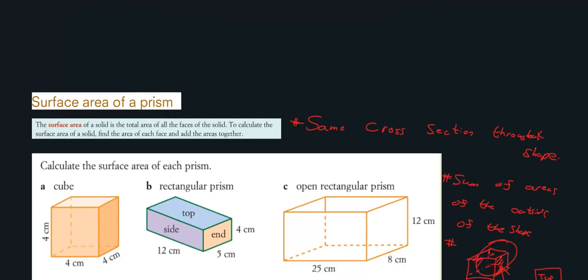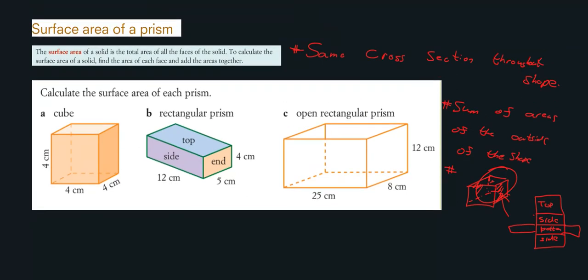Pause the video and see if you can calculate the surface area of each of these prisms. The first answer is 96, the second is 256, and the third is 992 centimeters squared. Pause the video and see if you can get the correct answers. Now I'm going to go through the easiest one first.